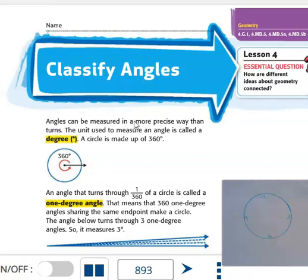Angles can be measured in a more precise way than turns. We were talking about a quarter, a half turn, and a full turn before. The unit used to measure an angle is called a degree. A circle is made up of 360 degrees.